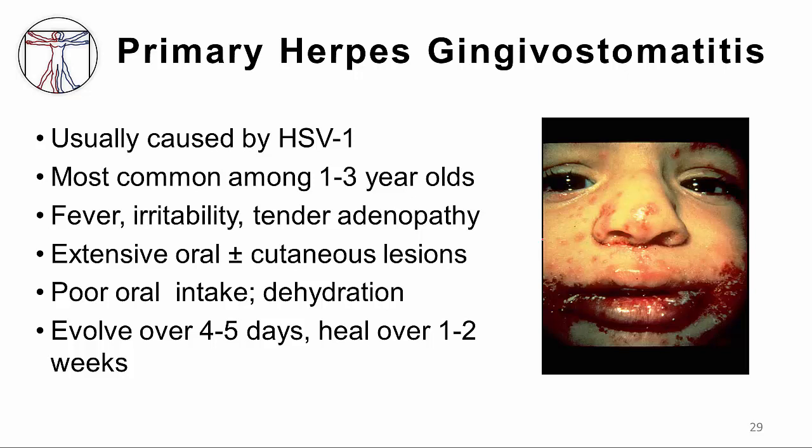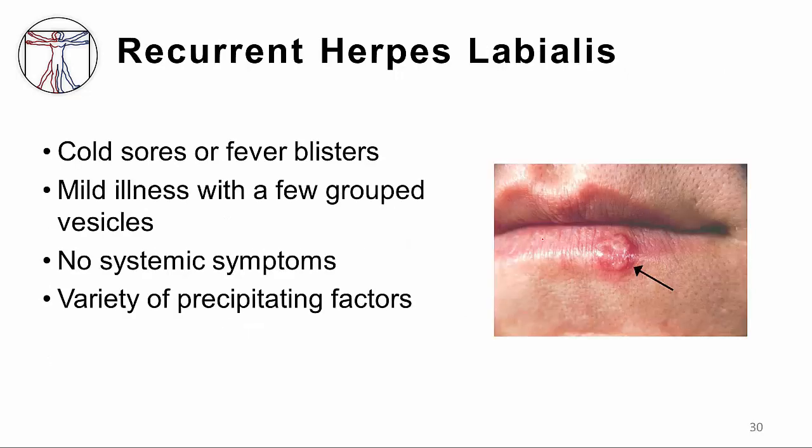HSV-1 gingivostomatitis is an infection occurring typically in a one to three year old, and when associated with symptoms and signs can be quite severe. The child may have a high fever, be miserable and irritable, have tender lymph nodes under the chin, and may have extensive oral and cutaneous lesions. Because of the pain of the lesions, the child doesn't want to drink or eat and gets dehydrated. The illness may evolve over four or five days and take one or two weeks to heal. After that infection, the virus becomes latent in the trigeminal ganglia and may reactivate as recurrent herpes labialis — commonly known as cold sores or fever blisters — which tends to be quite mild.